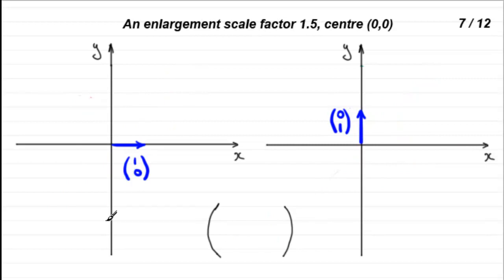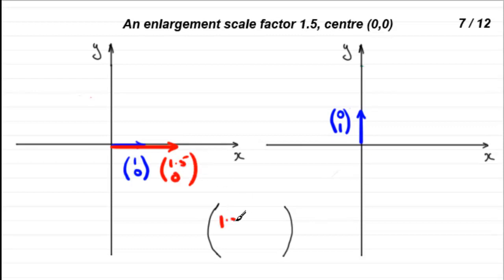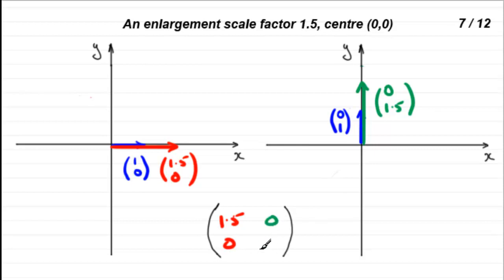For number 7, an enlargement scale factor 1.5, centre 0, 0. The vector (1, 0) is enlarged by scale factor 1.5, going to (1.5, 0). The second unit base vector (0, 1) also scales by 1.5, going to (0, 1.5). So the matrix has columns (1.5, 0) and (0, 1.5).